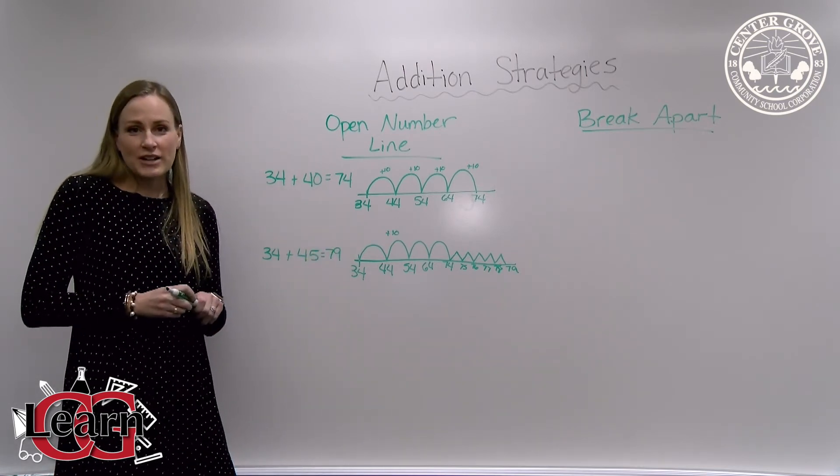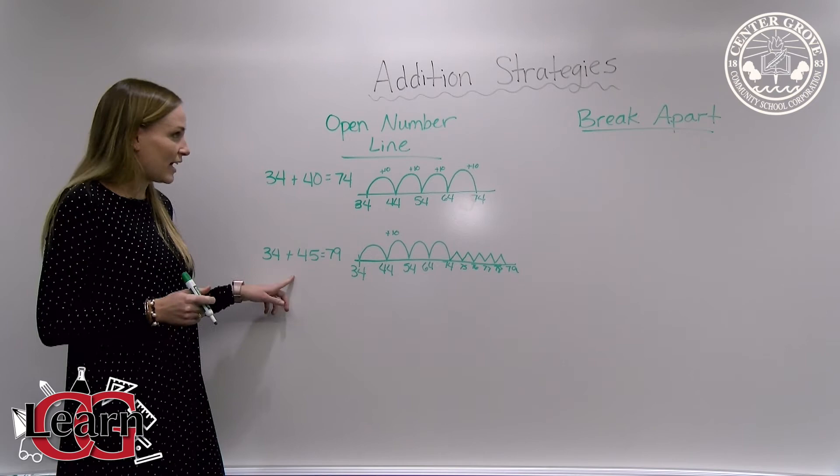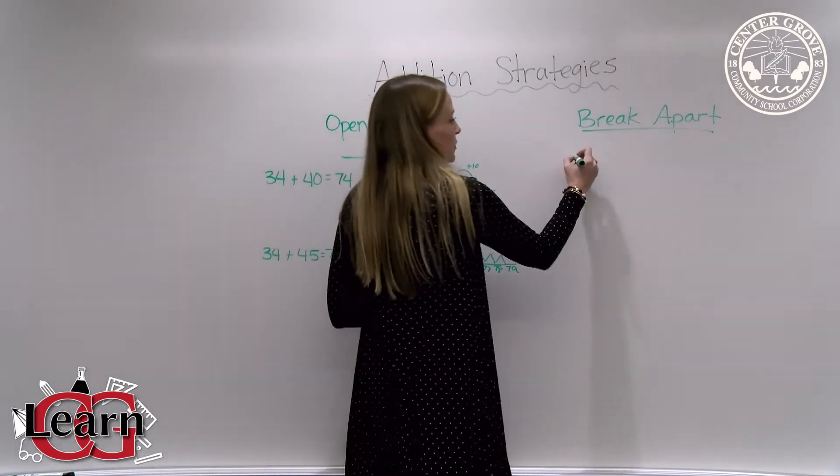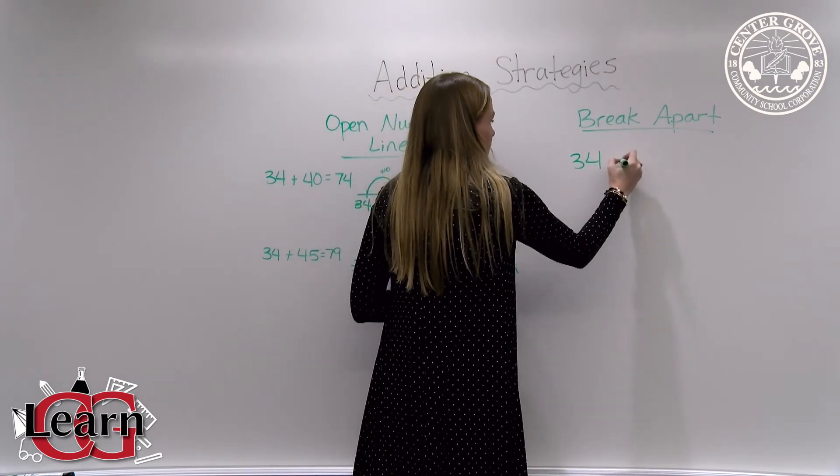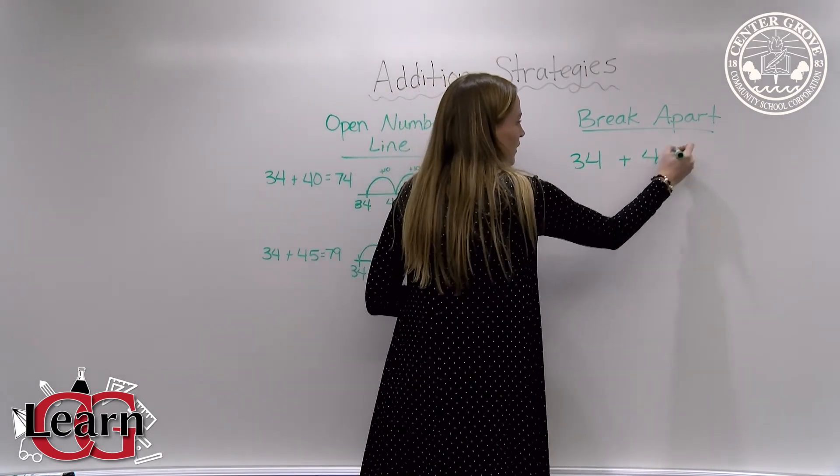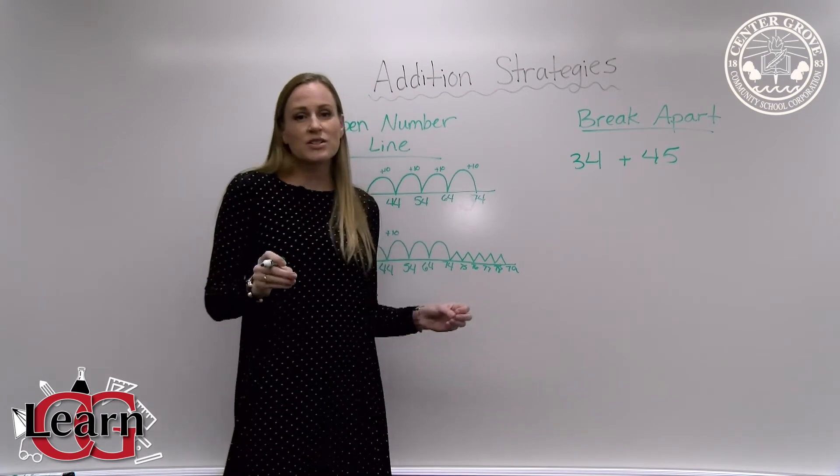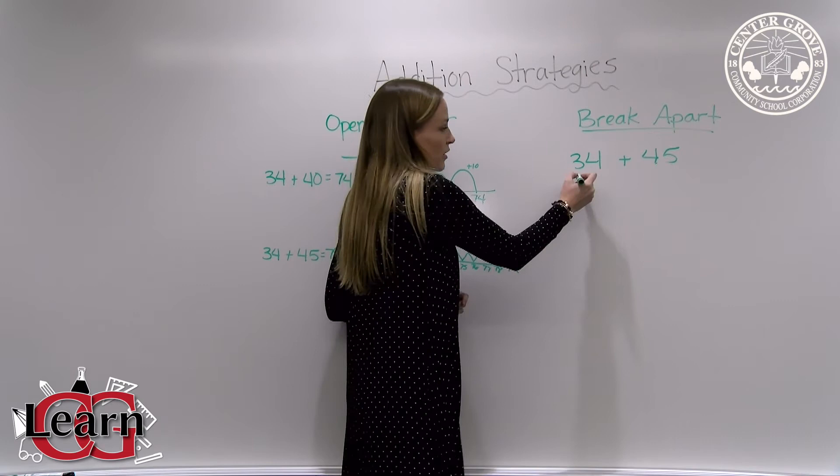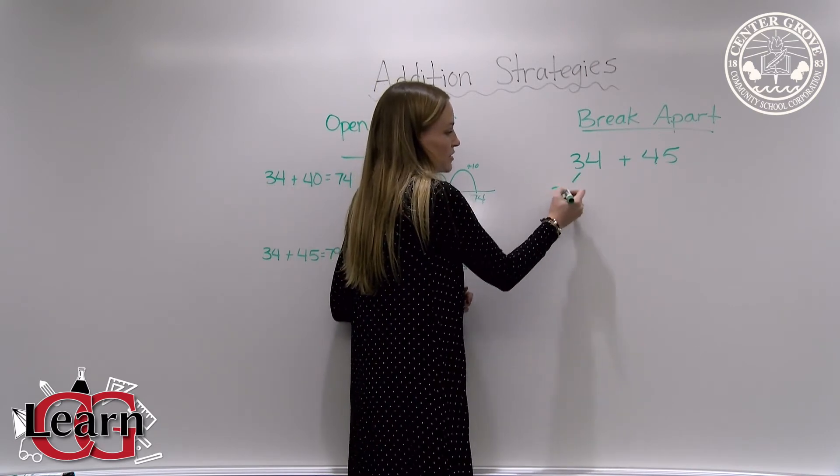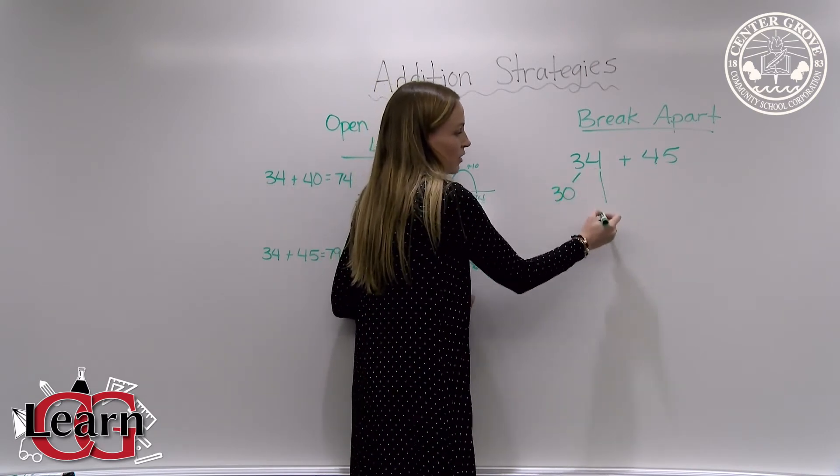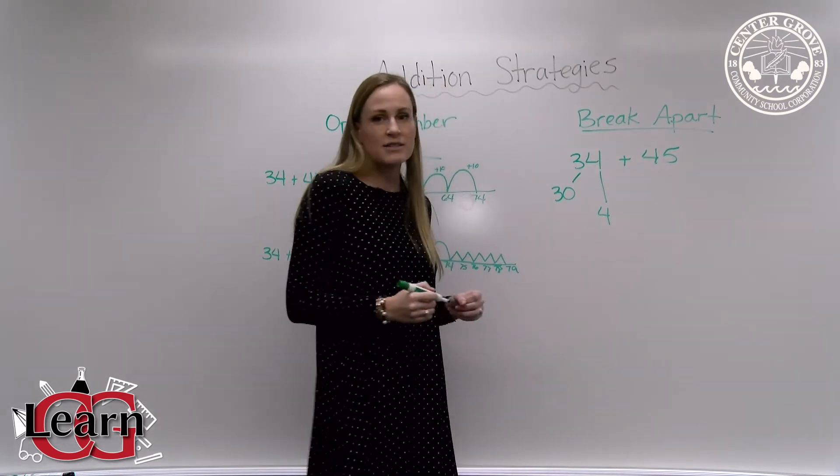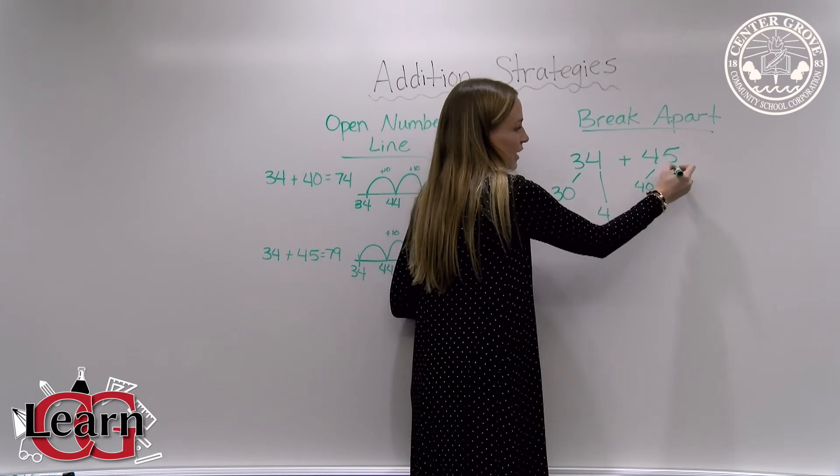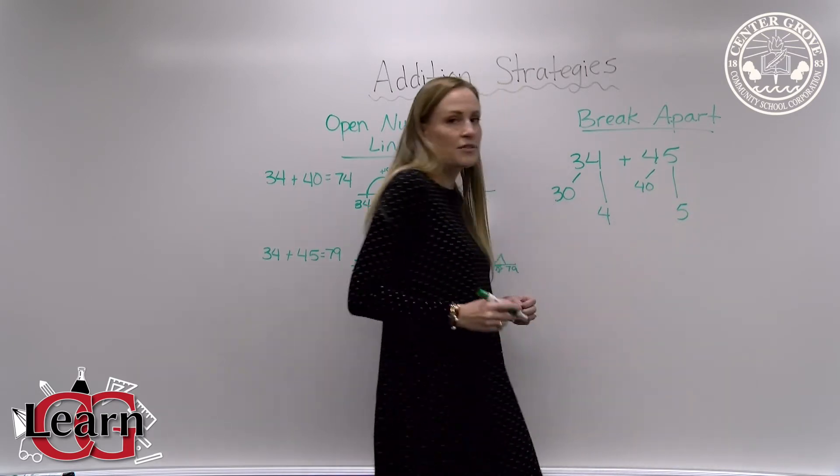Another strategy you can use when adding is called break apart. You're going to write your addition problem again. If we had 34 plus 45, we're going to break it apart into the tens and the ones so it's easier to add. On 34, the three represents 30 and the four represents four ones. Then do the same thing with 45. The four represents 40 and the five represents five ones.